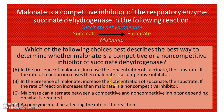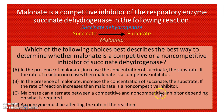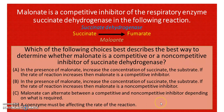Option B: In the presence of malonate, increase the concentration of succinate (the substrate). If the rate of reaction increases, then malonate is a non-competitive inhibitor. Option C: Malonate can alternate between a competitive and non-competitive inhibitor depending on what is required. Option D: A coenzyme must be affecting the rate of the reaction. I suggest you pause the video here and try to figure out the problem by yourself.